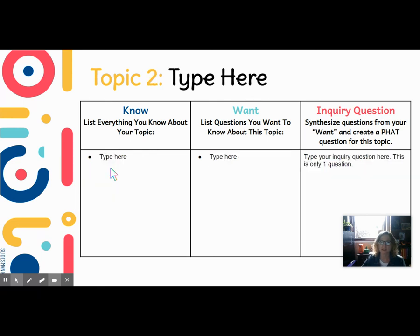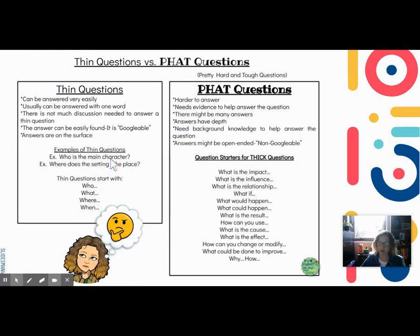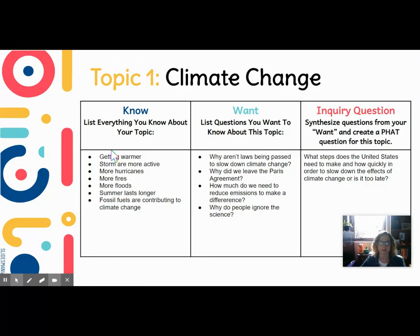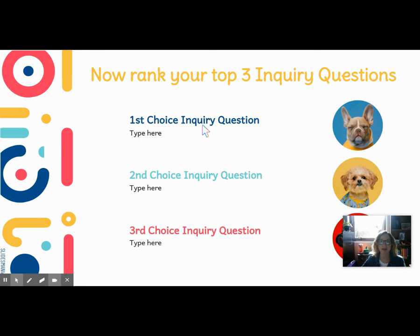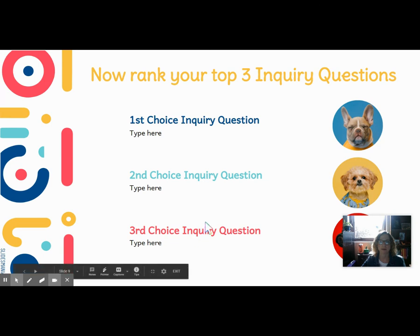You're going to do this process for four different topics. Remember, you've got your question starters right there. Then you're going to rank your inquiry questions from one, two, and three and type it in. That's it. Please let me know if you have any questions and have fun exploring. Bye-bye.